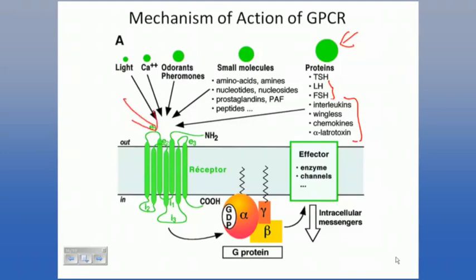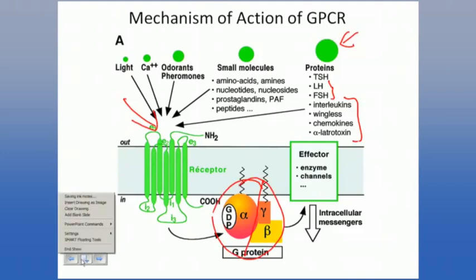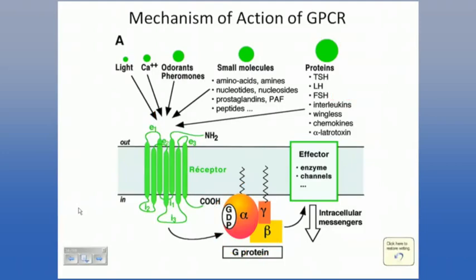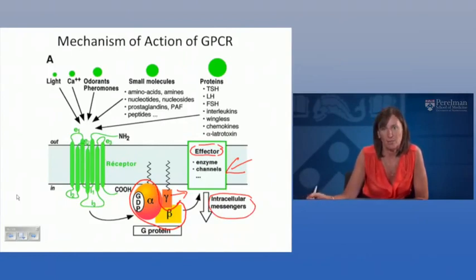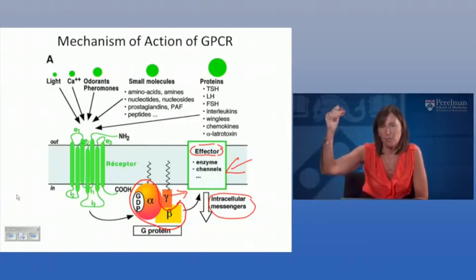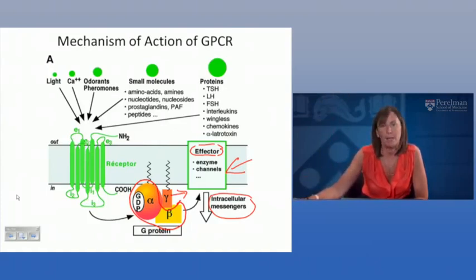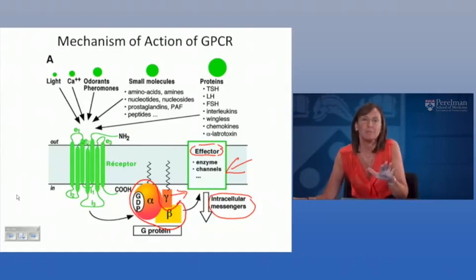That is a pictorial description of the sequence of events from the point of binding of the agonist through to bringing about the pharmacodynamic effect. This concept is very important. Let's look at several different G-proteins. For understanding purposes, I've selected three of the most common G-proteins that mediate the effects of G-protein coupled receptors: Gs, Gi, and Gq. Gs is linked to an effector, adenyl cyclase, causing a second messenger response resulting in an increase in cyclic AMP — typically a stimulatory response.